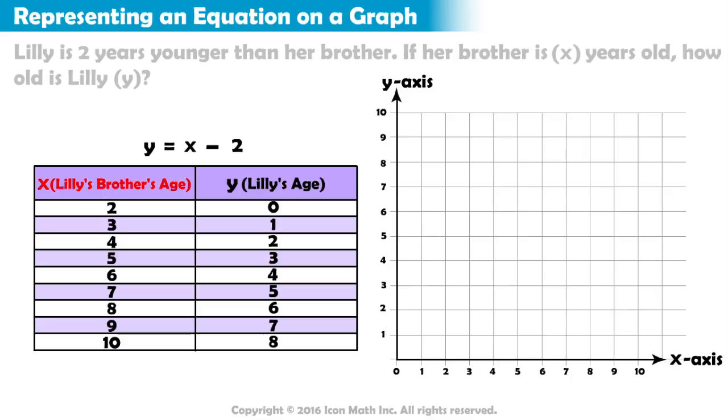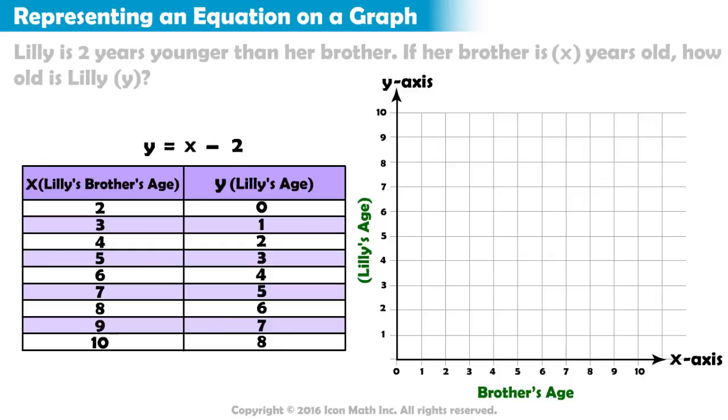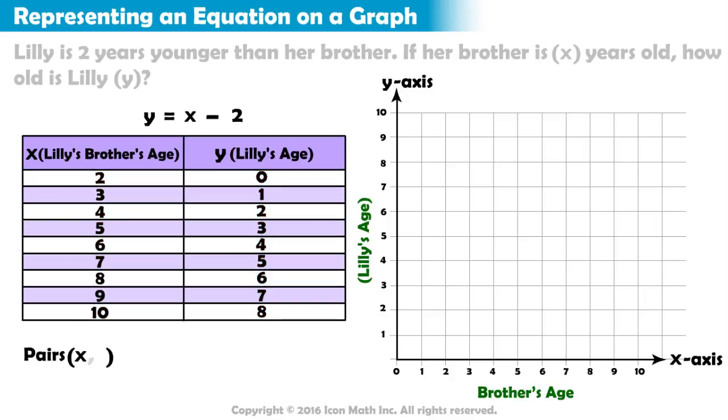The x variable stands for Lily's brother's age, so we will label the x-axis, brother's age. The y variable stands for Lily's age, so we will label the y-axis, Lily's age. Now we will use each x-value and its related y-value to create an ordered pair.